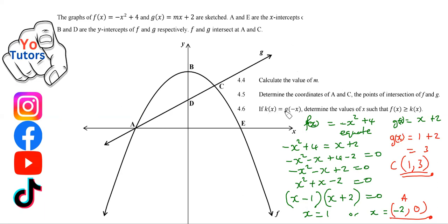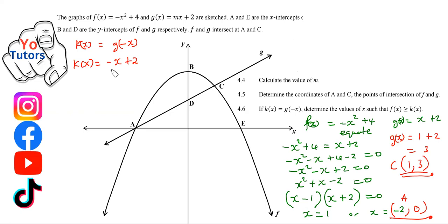The last part introduces k(x) = g(-x). This is a functional notation where we substitute -x into g(x). So k(x) = -x + 2. This means the graph of k passes through D and also through point E, giving us another straight line that is a reflection of g.